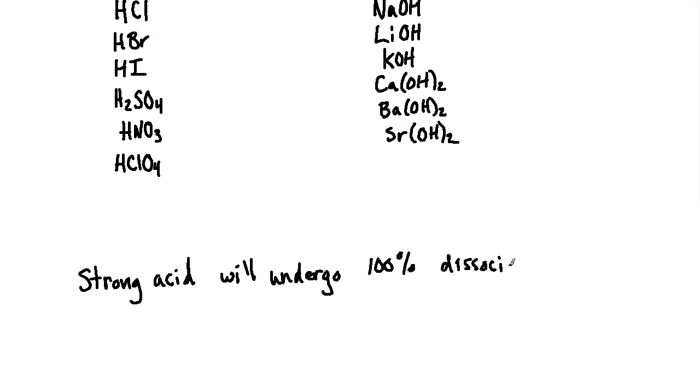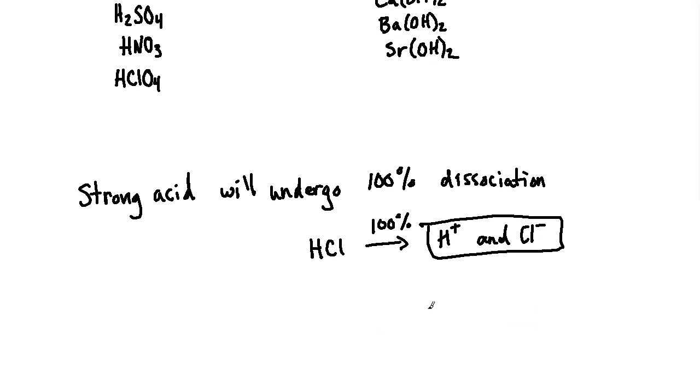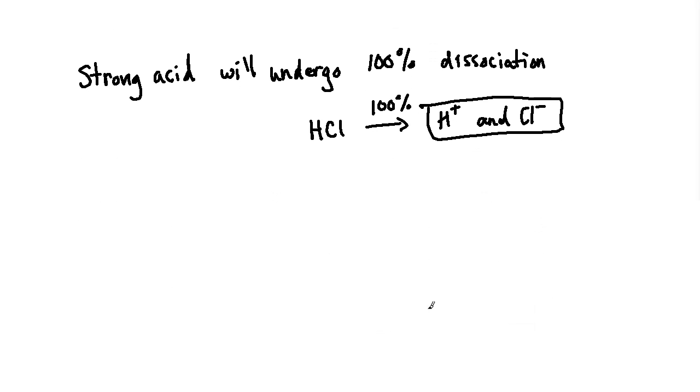And so what that means is that if I put something like HCl into solution, 100% of the HCl will become H plus and Cl minus. It will all go into this form. There will not be any HCl that exists anymore. 100% of it will dissociate over. And you can say the same thing for bases. So a strong base will undergo 100% dissociation. It'll give off all of its hydroxides when it comes apart in solution or dissociates in solution. So that is a better working definition of what it means to have a strong acid. So a strong acid will undergo 100% dissociation when it's put into solution.